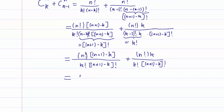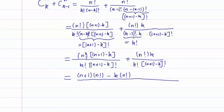So I get (n plus 1) times n factorial minus k times n factorial, and since they share a common denominator, I regroup everything: that gives us (n plus 1) times n factorial minus k times n factorial plus k times n factorial, all over k factorial times (n plus 1 minus k) factorial. The minus k times n factorial and plus k times n factorial cancel.